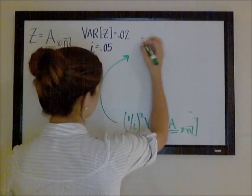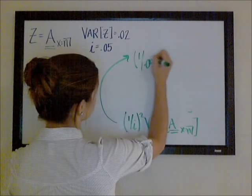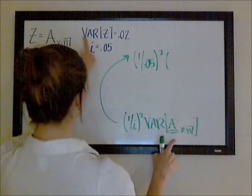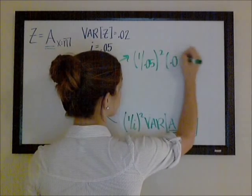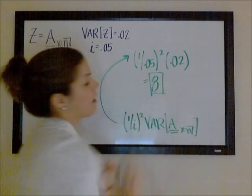So we have 1 over I, just 0.05 squared, times 0.02. And you should get 8.